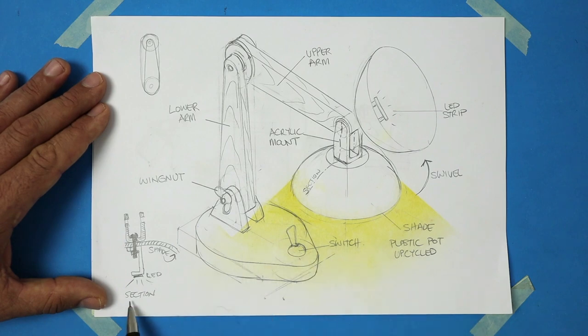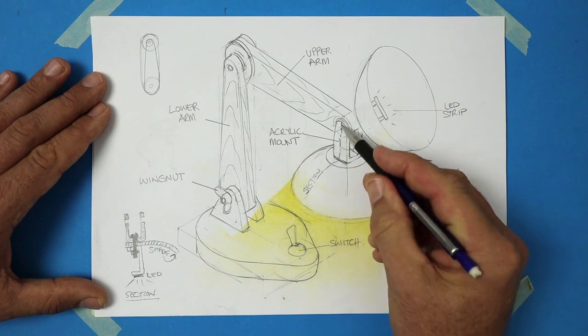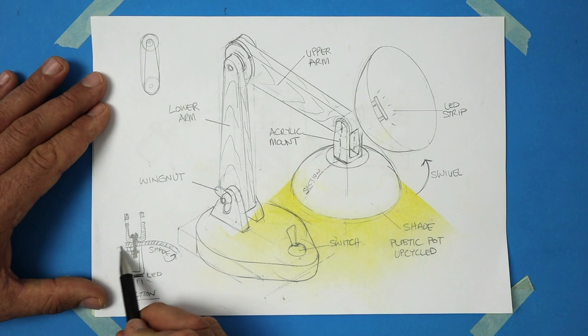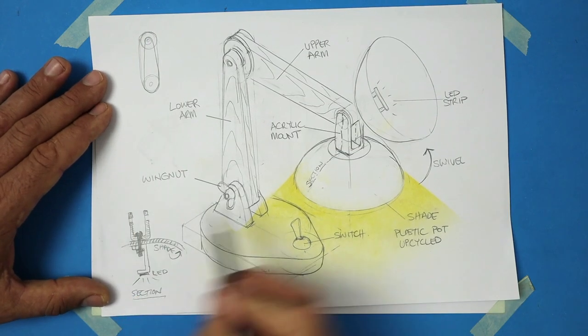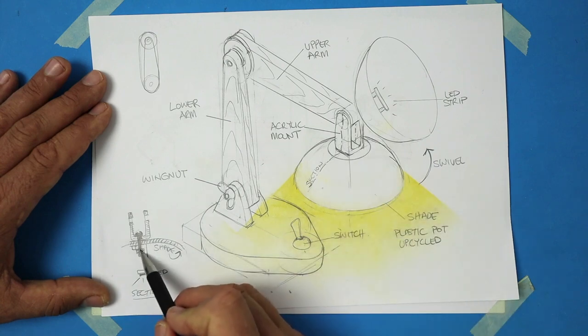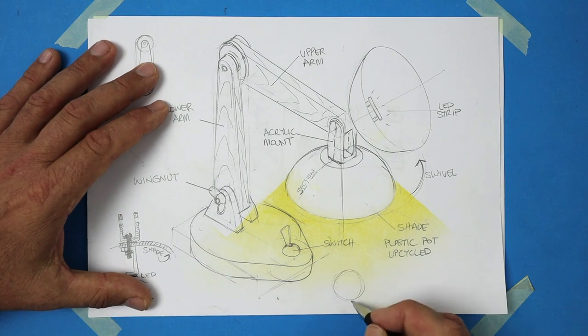This is a sectional view, it's great for showing how parts fit together. An imaginary cutting line or section line through there shows me the shade could be an upside down upcycle bowl, and there is the mount cut through. And it shows that I've got a bolt and nut holding it all together. I've repeated the theme of the two circles for the shape of the base as well.